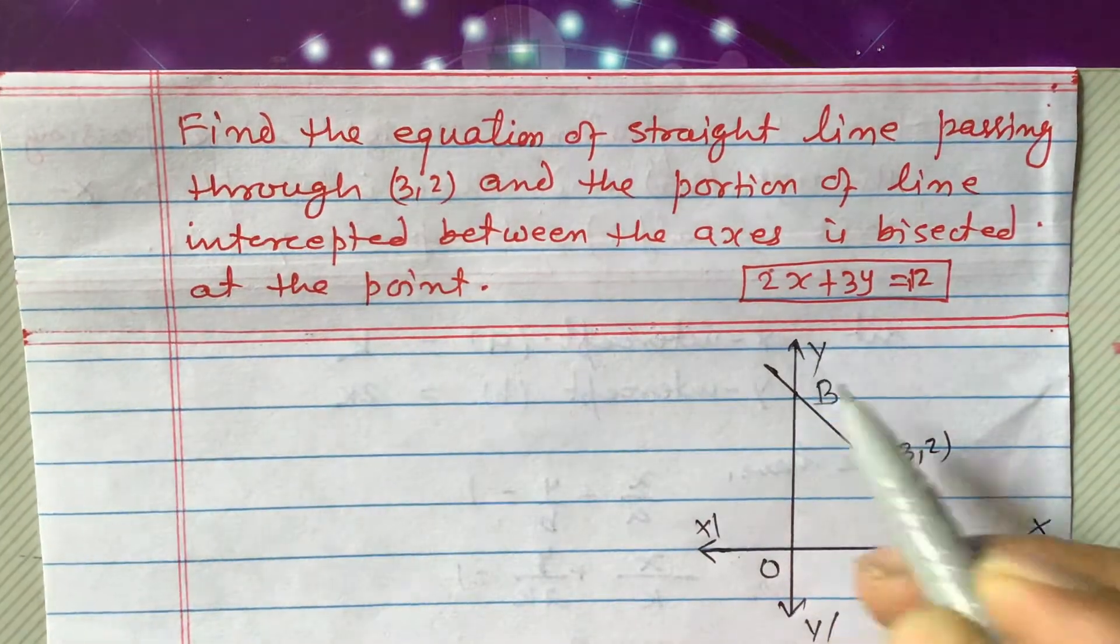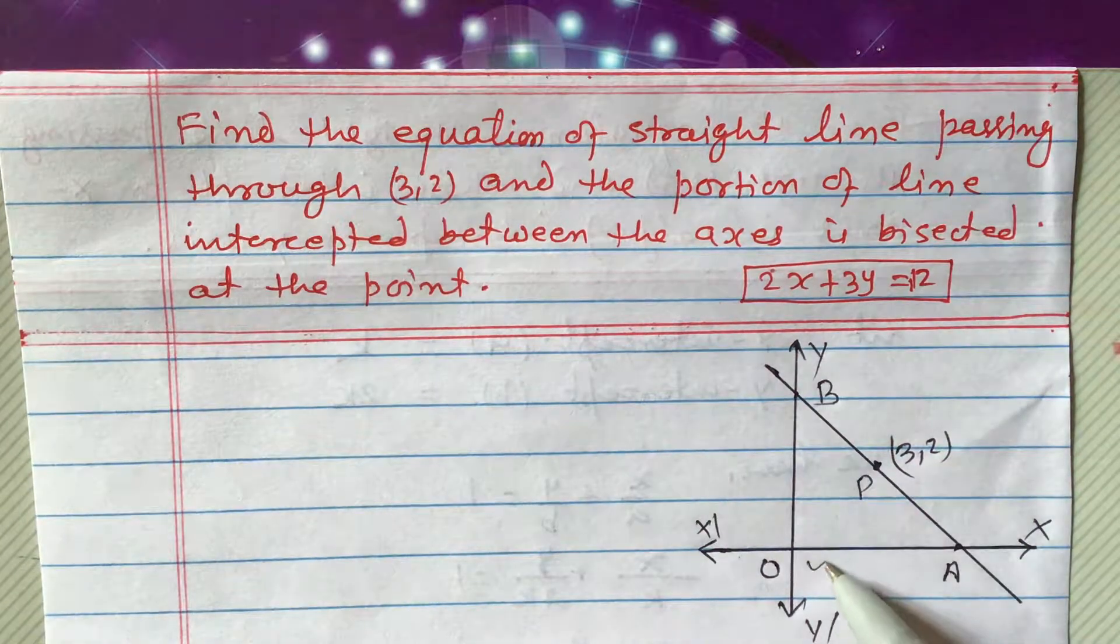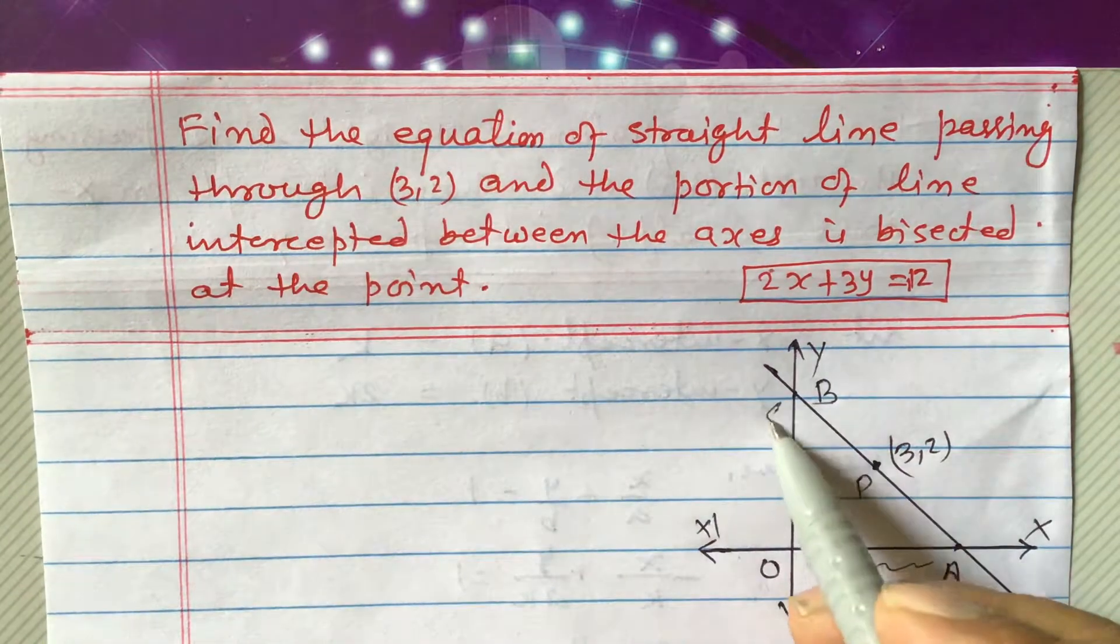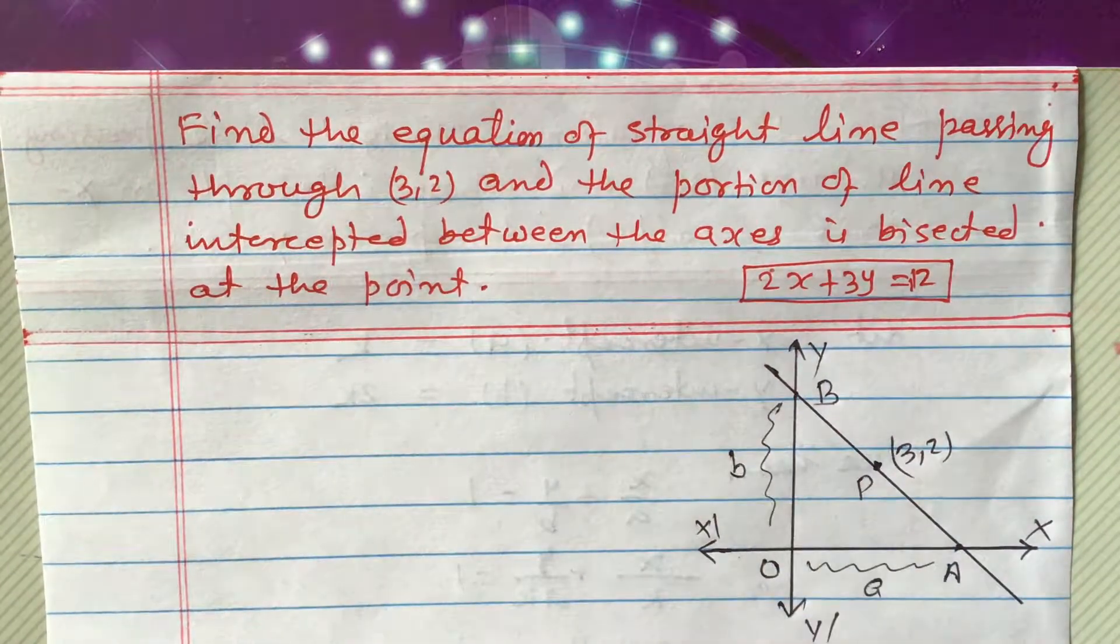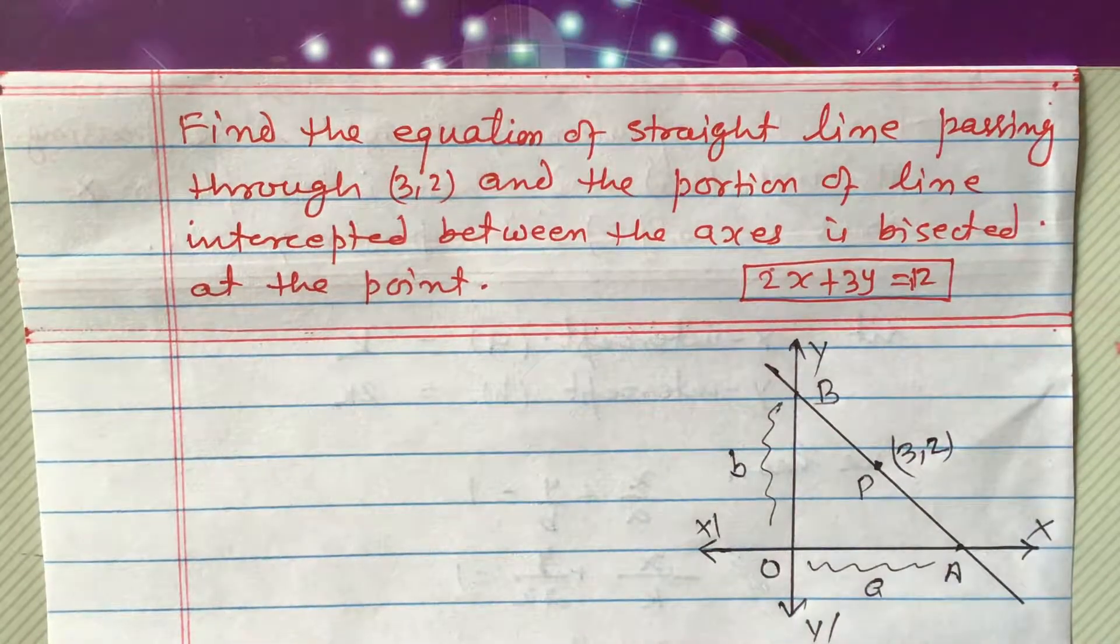Let us say this is point B. And now, consider, let us consider this point as B. Let us consider this as x intercept as A. And this is y intercept as B, we can suppose. 3, 2 is the point we can consider like this.